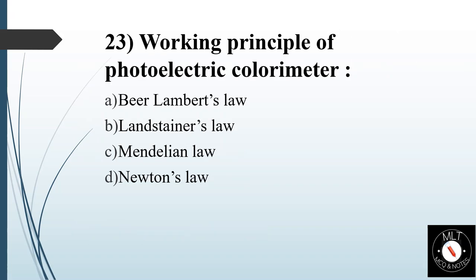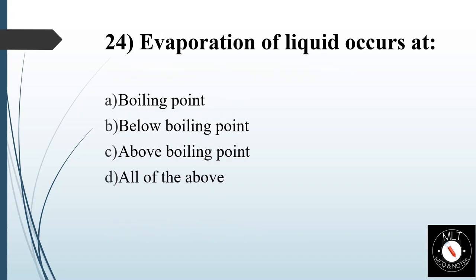Twenty-third question. Working principle of photoelectric colorimeter. Option A: Beer-Lambert's law. Option B: Landsteiner's law. Option C: Mendelian law. Option D: Newton's law. Answer is Option A: Beer-Lambert's law.